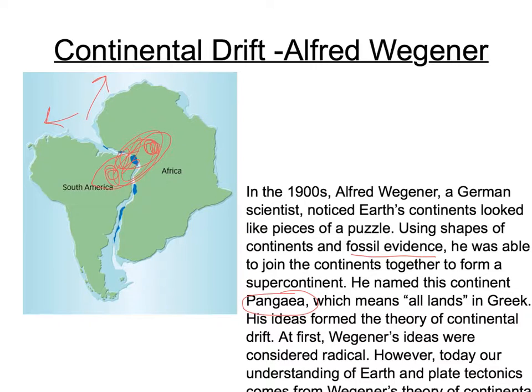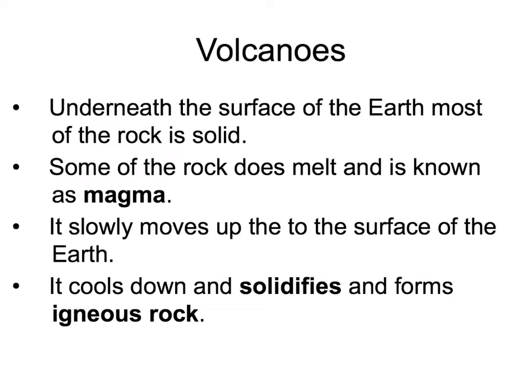The tectonic plates themselves are still moving. Underneath the surface of the earth, most of the rock is solid. Some of the rock does melt and is known as magma. It then moves up to the surface of the earth. When it's at the surface, it is then known as lava. This lava cools down and solidifies and forms igneous rocks. The word igneous itself means 'from fire'.